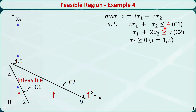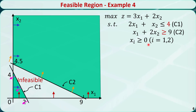In this example, the first constraint is still less than or equal to, but the right-hand side is changed to 4, so the feasible region of c1 is below this line. The second constraint is a greater than or equal to constraint, so the feasible region of c2 is above this line. However, there is no intersection, and the feasible region of the problem is an empty set — so the problem is infeasible.